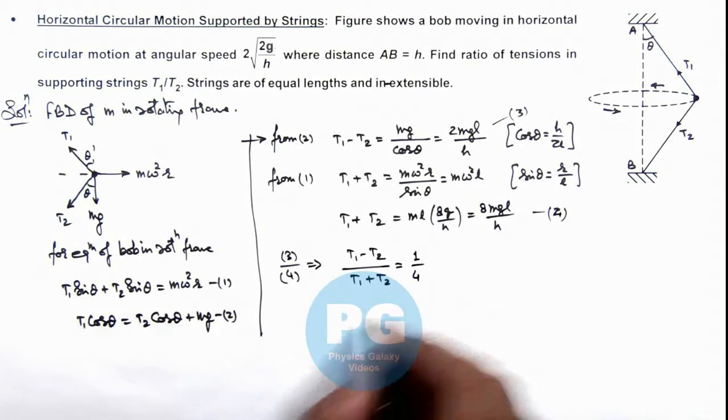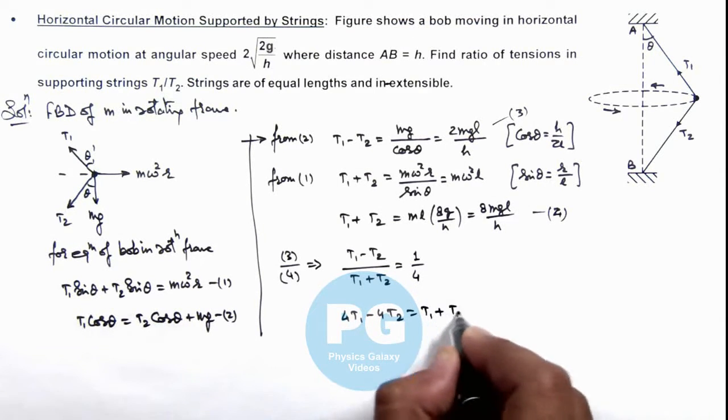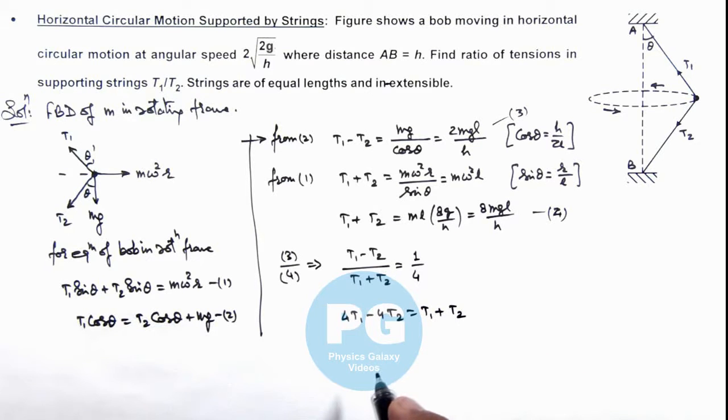Further, if we cross multiply: 4T₁ - 4T₂ = T₁ + T₂. So in this situation we can further simplify and this is giving us 3T₁ = 5T₂, and the value of T₁/T₂ we are getting is 5/3. That will be the final result of this problem.